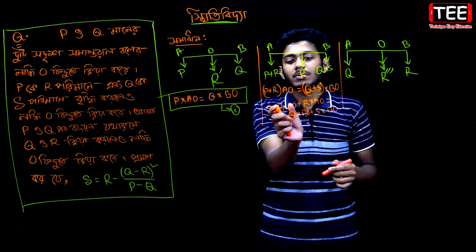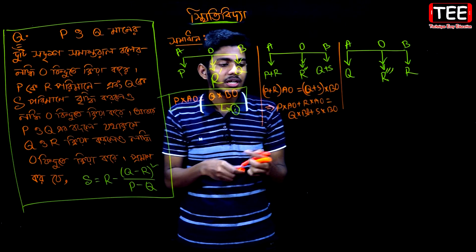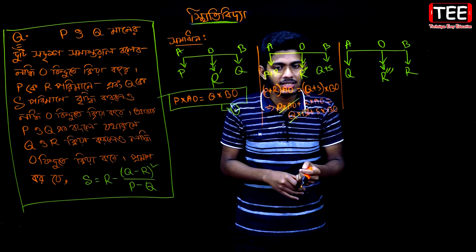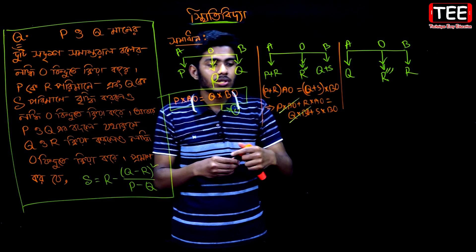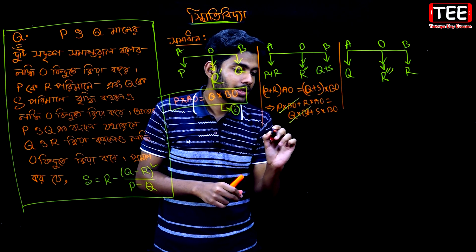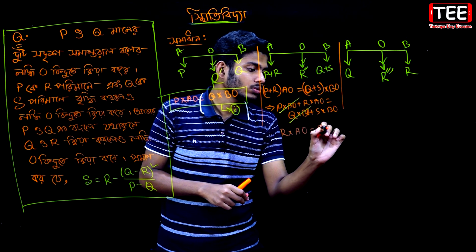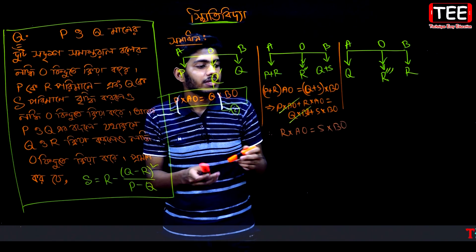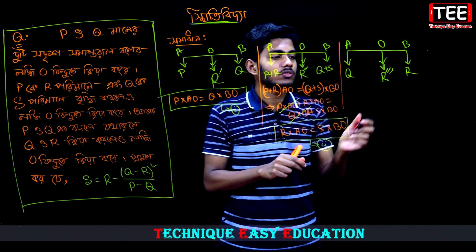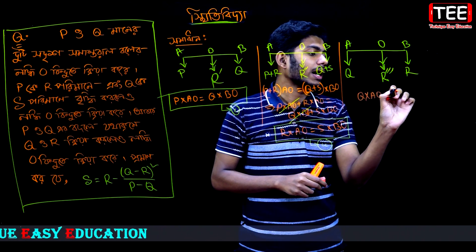P into a is equal to q into b. So p into a and q into b is the same — as if you cut it, this is the same as if we cut it and change it. R into a is equal to s into b.